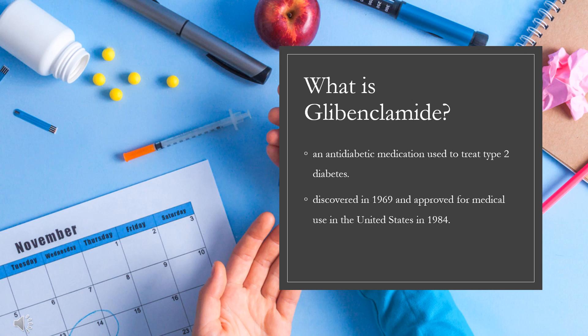Glibenclamide was discovered in 1969 and approved for medical use in the United States in 1984. It is available as a generic medication. In 2022, it was the 200th most commonly prescribed medication in the United States, with more than 2 million prescriptions.